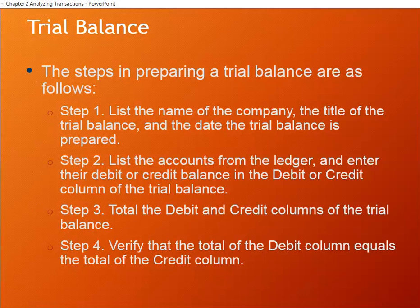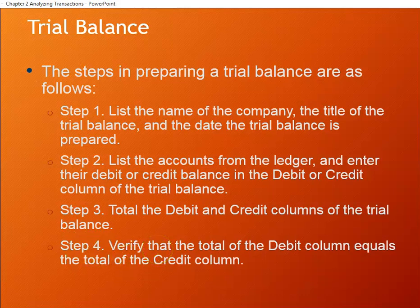These steps applied back in, say, 1974 when working on paper. Today it's an automated process. That doesn't mean we can let the computer do everything — we still have to visually scan the trial balance to see that it makes sense. For example, our cash balance should match our adjusted balance from the bank statement. If accounts payable shows a debit balance, we probably have a mistake. If wage expense for a month is half of what it always has been, we probably made a mistake somewhere.